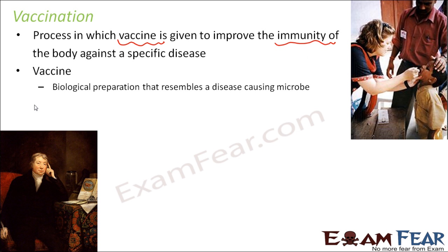A vaccine is a biological preparation that resembles a disease-causing microbe. When your body encounters a particular microbe, certain cells inside the immune system keep the memory of that encounter. So once your body has been attacked by a particular disease-causing microbe, it remembers that. The next time the same microbe comes and tries to attack, the body fights back with greater immunity so that the disease cannot win and the person is not affected.